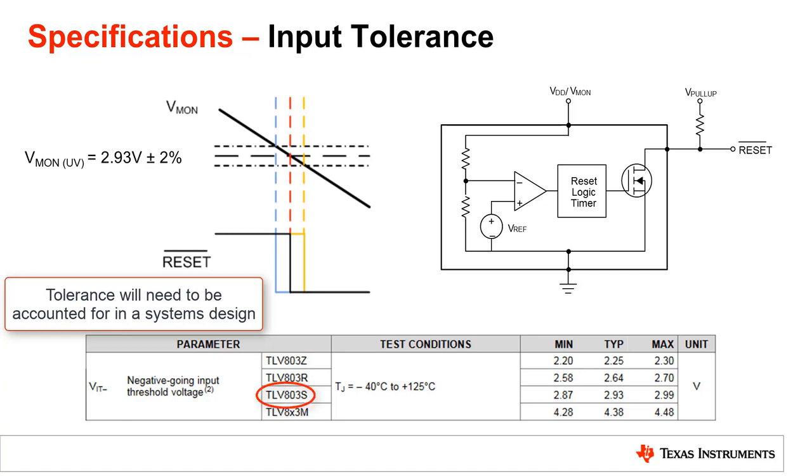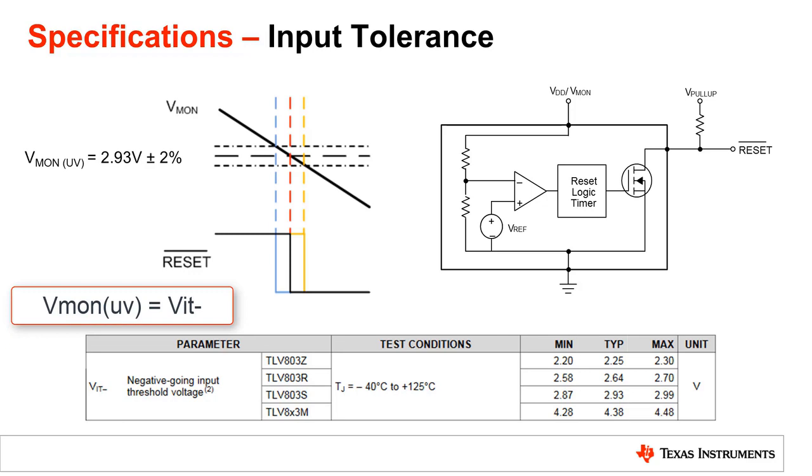For example, take the TLV803S in the figure shown above. VmonUV, referred to directly as VIT-, is set to 2.93 volts nominally. However, looking at the datasheet, if tolerances are accounted for, the threshold voltage may deviate from 2.87 volts to 2.99 volts, which would cause the reset to assert earlier or later. This particular device then has a tolerance of plus or minus 2% across the full operating temperature range. If tighter voltage tolerances are needed, voltage supervisors that have more complex designs could yield better tolerances, some as good as plus or minus 0.9%.